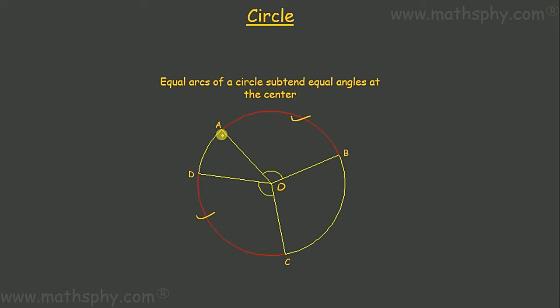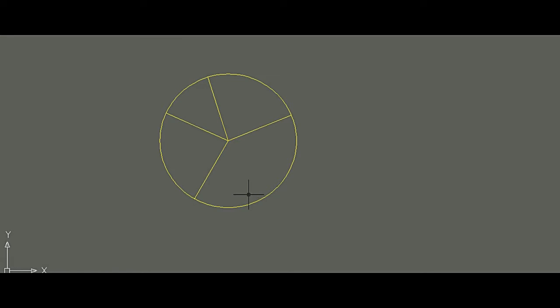To make this theorem clearer, let's draw a circle and highlight equal length arcs to see if the angles made by those arcs are equal. I am going to draw a circle with radius 3. Here is the circle — let's cut two arcs of equal length from this circle.